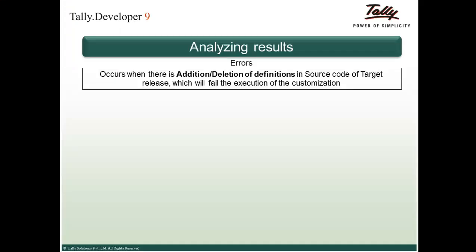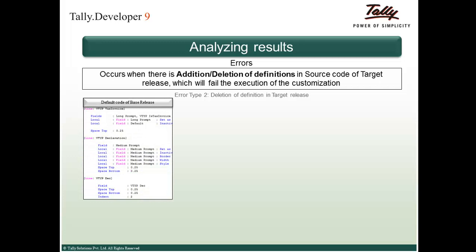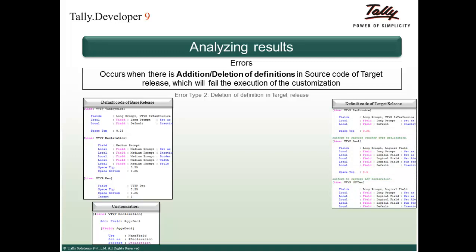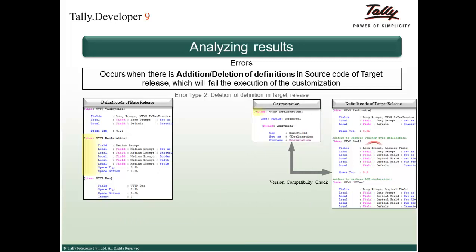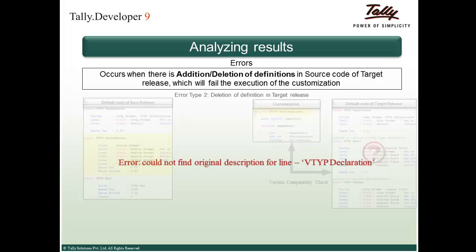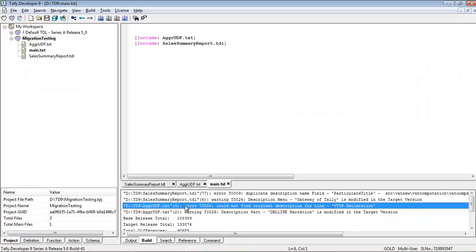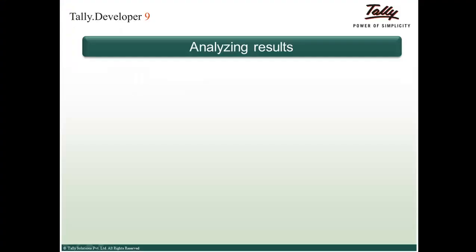Now consider the case where a definition has been deleted from the target release. The base release has three line definitions: VTYP Tax Invoice, VTYP Declaration, and VTYP DEC. A customization adds a new field to the line VTYP Declaration, compatible up to release 4.8. In release 5.0, the line definition VTYP Declaration is missing. Performing the version compatibility check shows the error 'Could not find original description for line VTYP Declaration', visible in the build tab of Tally Developer 9.